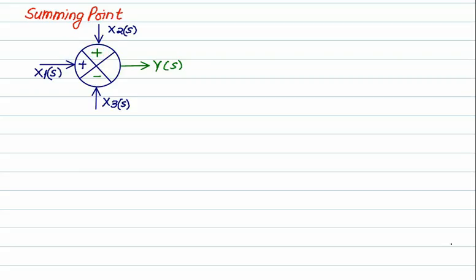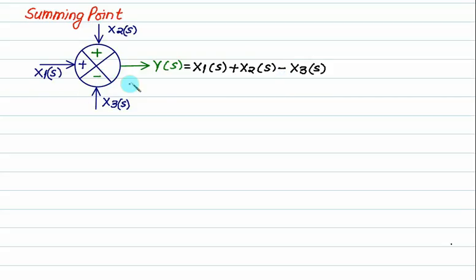For example, x1 is positive, x2 is also positive, but the sign of x3 is negative. So at most this summing point can accept three inputs — input 1, input 2, input 3 — but there is only one output. Output is always one; input can be any number.